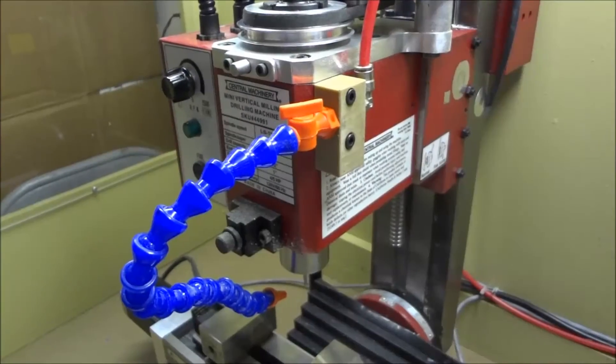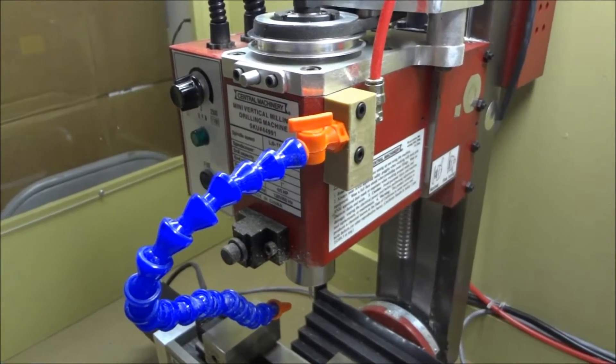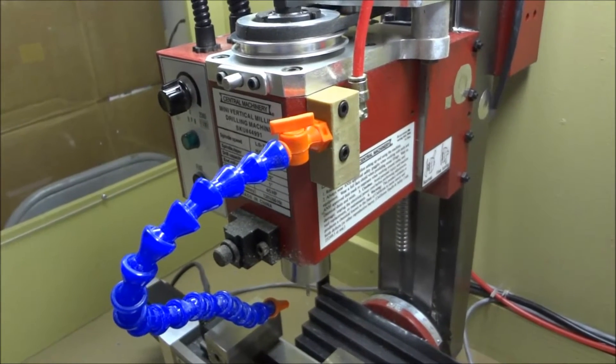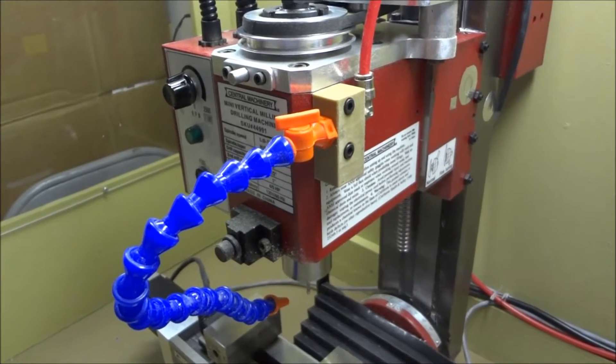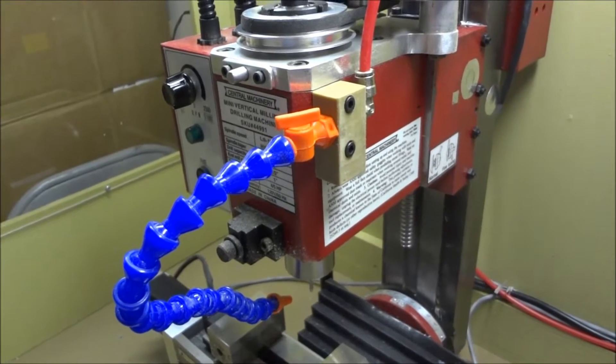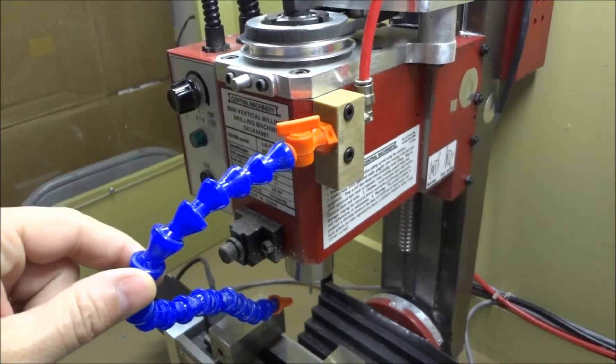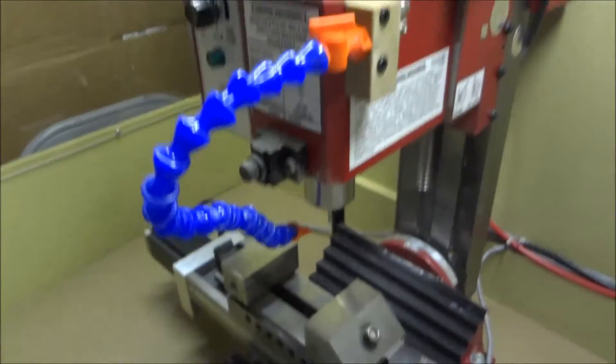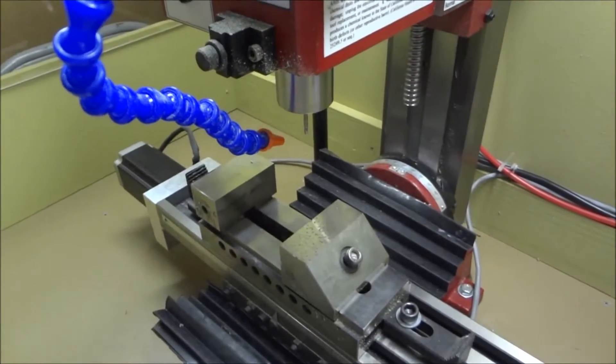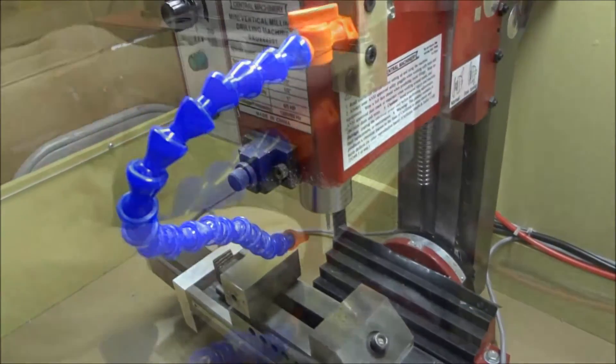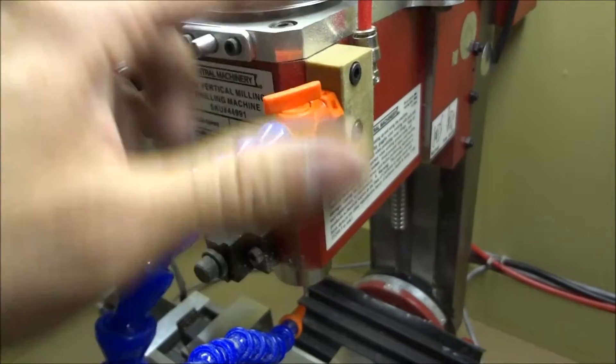All right, well this is my latest addition to the X2 mill. I've been real busy doing other things so I haven't really done anything extra to the mill except use it, but I wanted to add a way to blow the chips away from the workpiece and the toolpath. So I had to make an adapter block.